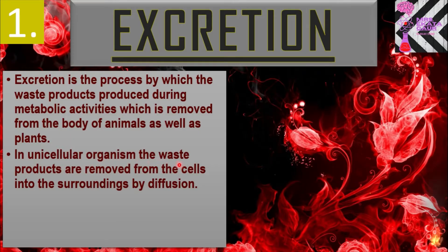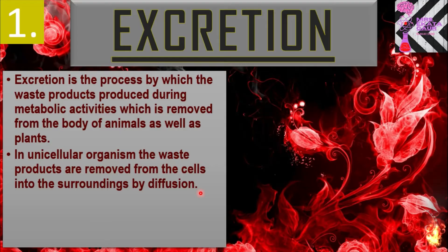In unicellular organisms, the waste products are removed from the cells into the surrounding by diffusion. In unicellular organisms like amoeba, when any waste material is produced in the cell, it is removed from the cell. That process is called diffusion.